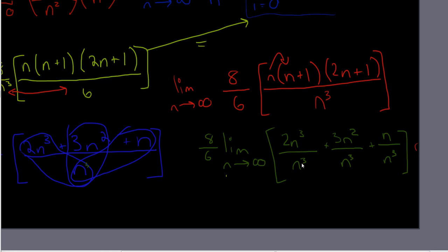So now we can finally take the limit. First of all these cancel out. 2 cancel out on the top, meaning there's 1 on the bottom. 1 cancels on top. So then you get 8 over 6 limit n goes to infinity. This cancels out to become 2 plus 3 over n plus 1 over n squared.